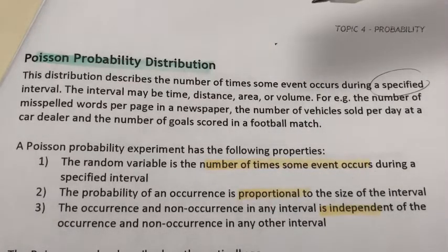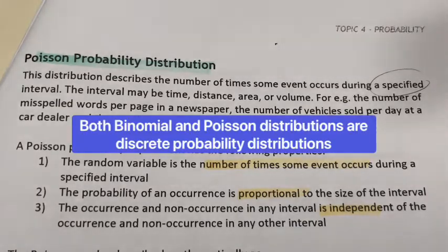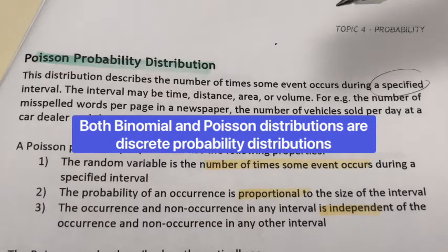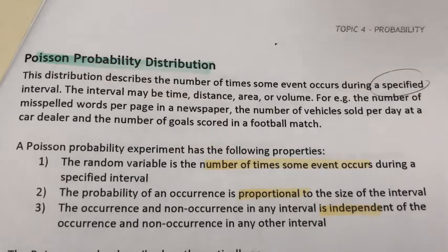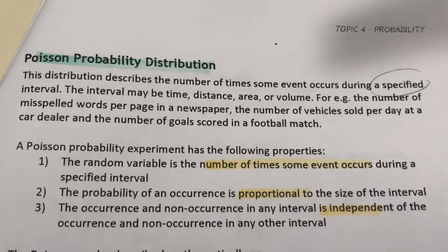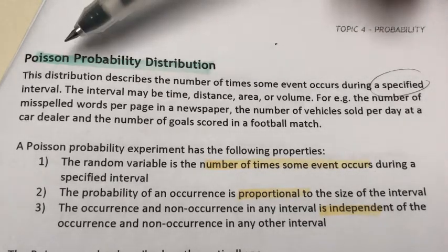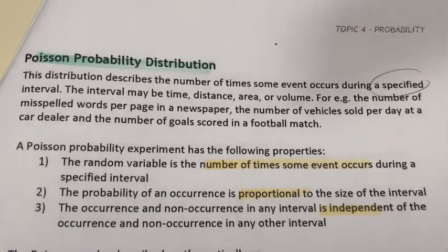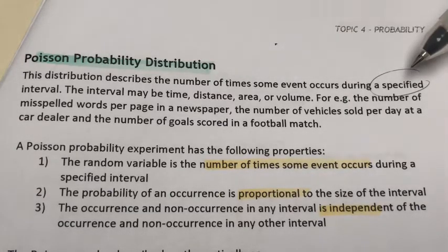Both the binomial and Poisson probability distributions are discrete types in that the random variable x is a result of counts. For a binomial distribution, x is the number of successes in a binomial experiment. Whereas for a Poisson distribution, x is the number of times an event occurs during a specific interval — that interval part is the distinguishing feature.